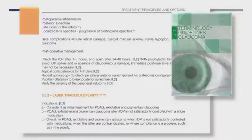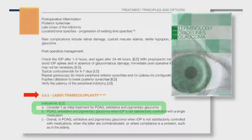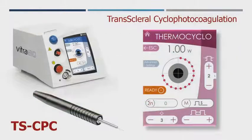Where is the place to use SLT in our glaucoma patients? In the laser trabeculoplasty chapter of the terminology and guidelines for glaucoma, it is clearly stated to consider it as an initial treatment for POAG and pigmentary glaucoma. So there is a published guideline-supported place for it. Now let's quickly move to the other tissue: the ciliary body.